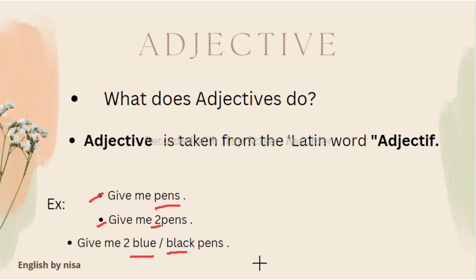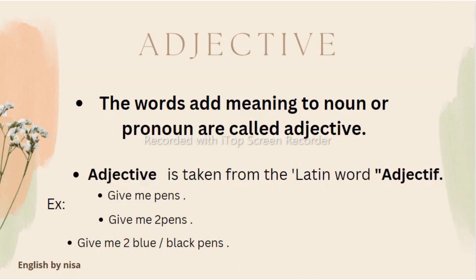Both 'two' and 'blue/black' are adjectives here — 'two' shows quantity and 'blue/black' shows quality, both adding meaning to the noun. One more example: in my class 100 students are there, yesterday 30 were absent. The word 'student' is a noun and '100' shows the quantity. All 100 are intelligent, sincere, and hardworking — these terms show their quality. So basically, the words which add meaning to a noun or pronoun are called adjectives.